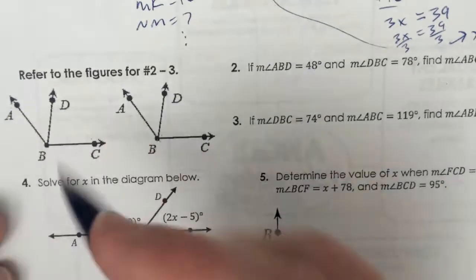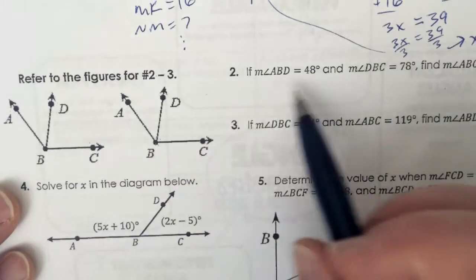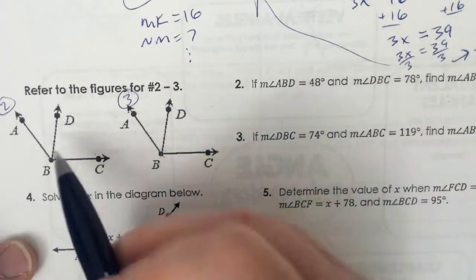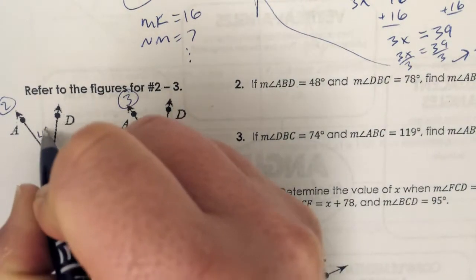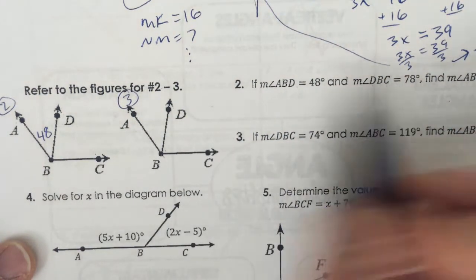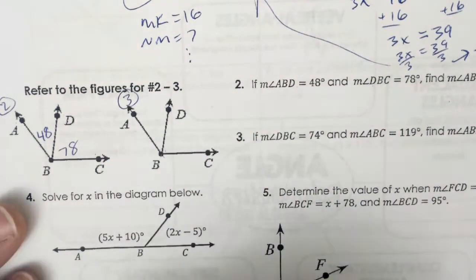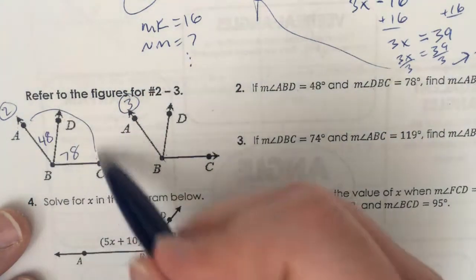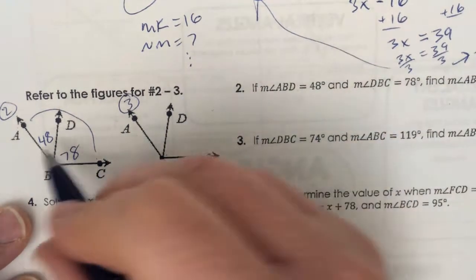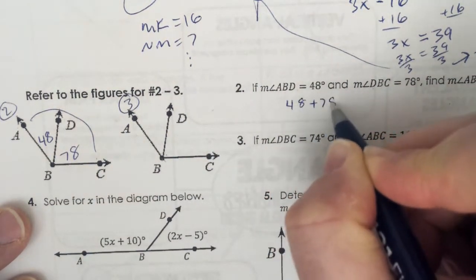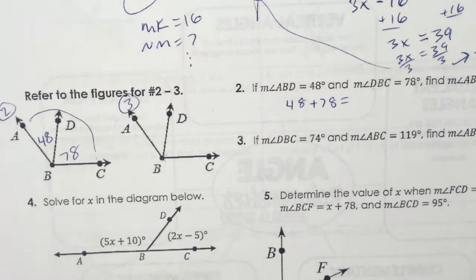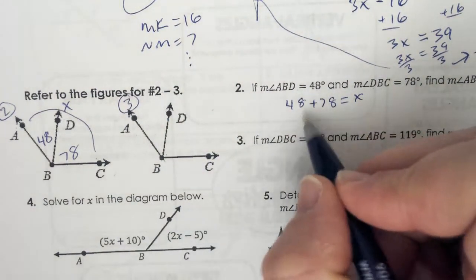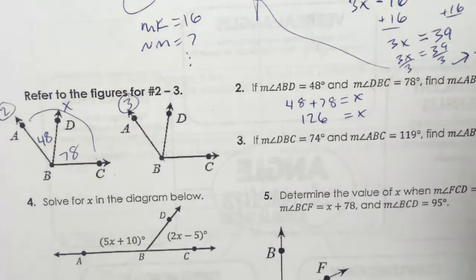Same idea for number 2. Angle ABD is 48 and angle DBC is 78. They want angle ABC — the whole shebang. So 48 plus 78 equals 126, and that's our answer: X equals 126.